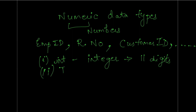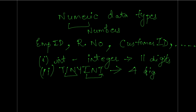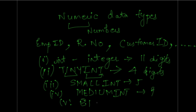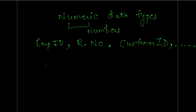Apart from INT, MySQL also has TINYINT, SMALLINT, MEDIUMINT, and BIGINT. TINYINT stores up to 4 digits, SMALLINT stores up to 5 digits, MEDIUMINT stores up to 9 digits. If you want to store a number with more than 11 digits, you use BIGINT, which stores up to 20 digits.